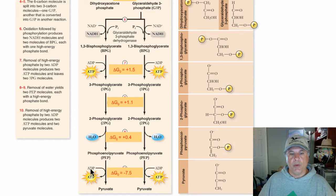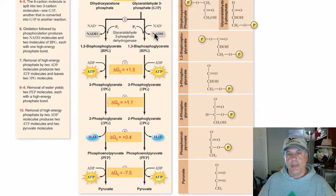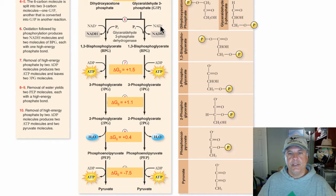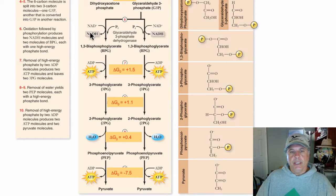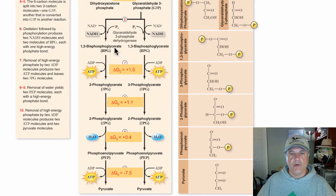We invested 2 ATP at the beginning but yielded 4 in the energy-yielding phase. Also, we produced 2 molecules of NADH because there are 2 molecules of glyceraldehyde 3-phosphate that enter the energy-yielding phase — so we have 2 reductions of 2 NAD molecules yielding NADH and NADH. That is glycolysis. Now, what are we going to do with pyruvate? Let's consider the overall reaction of glucose in glycolysis and what the next steps will be in the oxidation of foodstuffs.